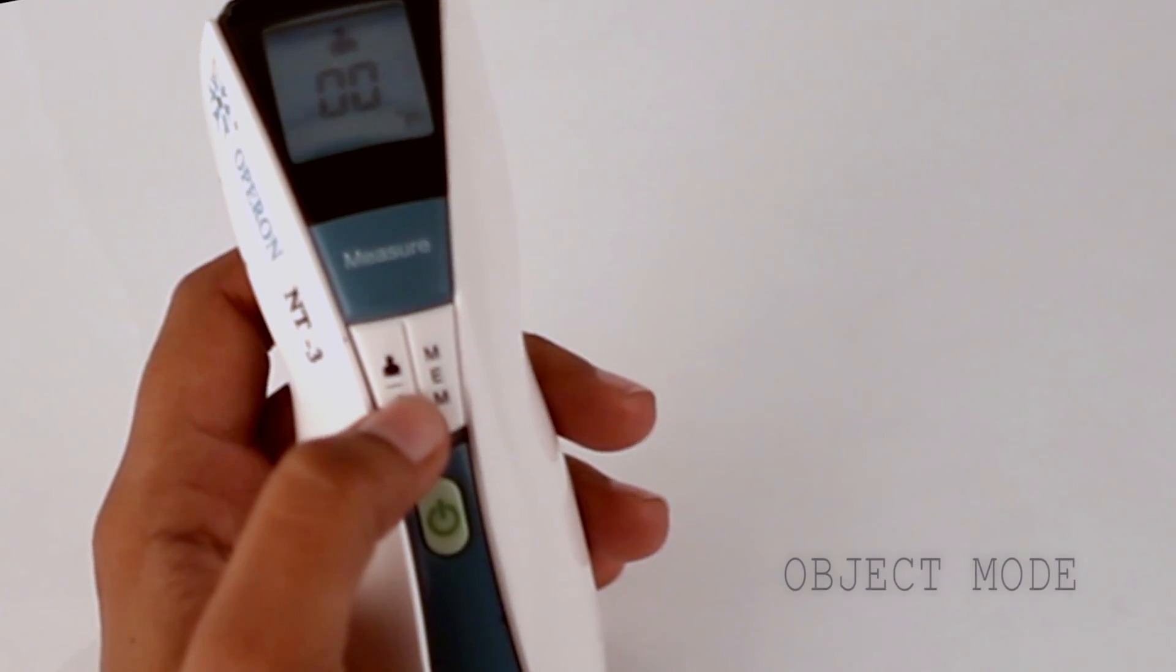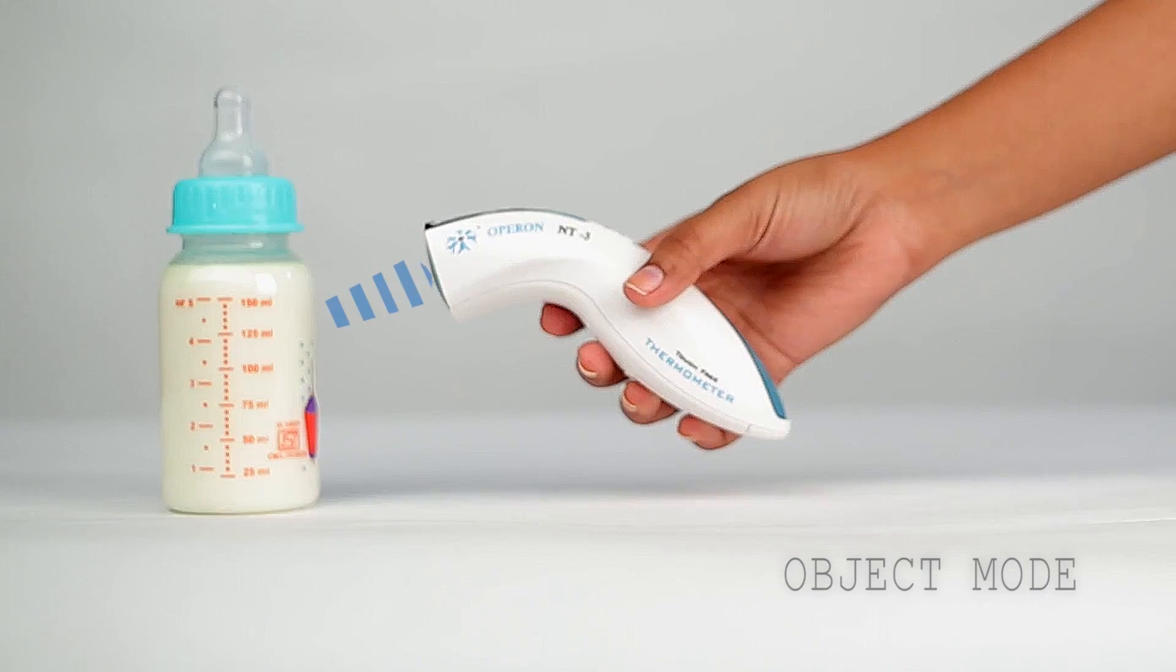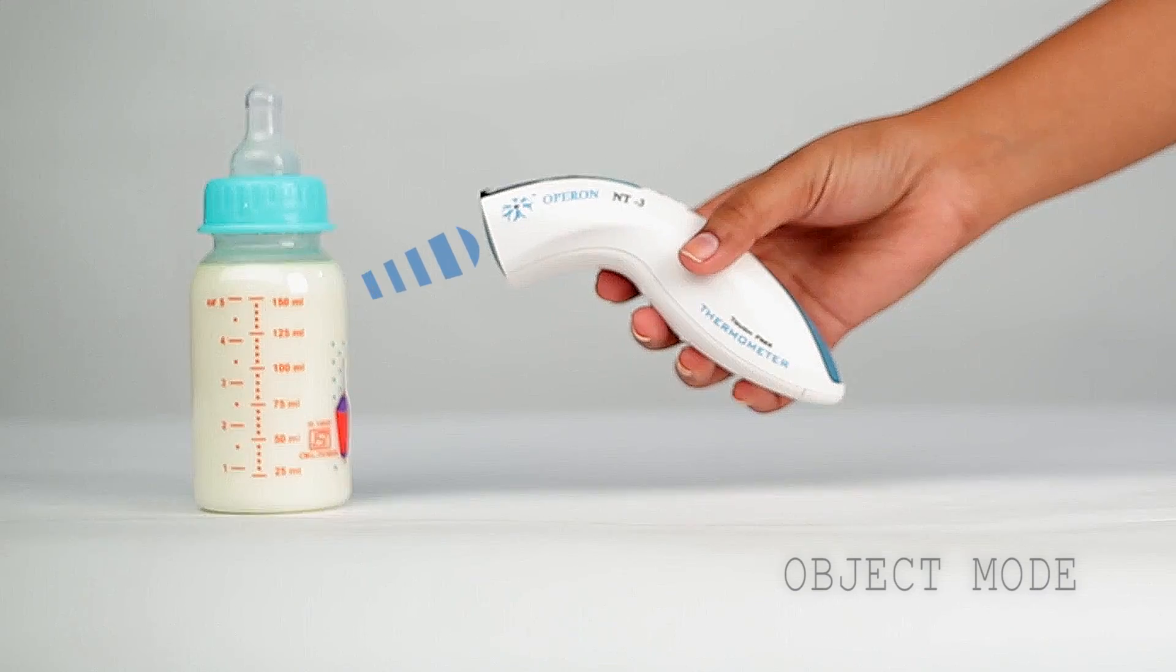For object measurement, select the object function and follow the rest of the procedures as described for human body. Object mode will not give continuous beep sound but only one beep.